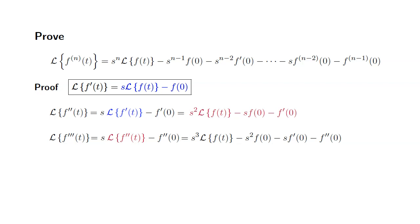Here we try to recognize the pattern. For the third derivative, you start with s cubed and the powers go down one by one: s squared, s, then one. The very first term is always the Laplace transform of f of t, and all the other terms have a negative sign. We start with f of 0, then f prime of 0, f double prime of 0 — and for f triple prime, the last term is f double prime of 0, which is one less derivative.